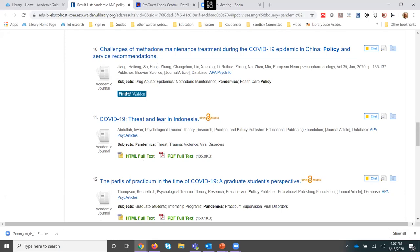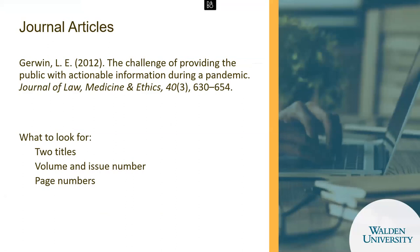Let me pop back to my PowerPoint to show specific examples of citations. For journal articles — which we deal with the most when working with assignments at Walden — the entry starts with the author name, as they always do. A journal article is always going to have two titles: the title of the article and the title of the journal it was published in. In this example, the article title is 'The Challenge of Providing the Public with Actionable Information During a Pandemic,' and the journal title is Journal of Law, Medicine and Ethics. It will also give you a volume, issue number, and page numbers.